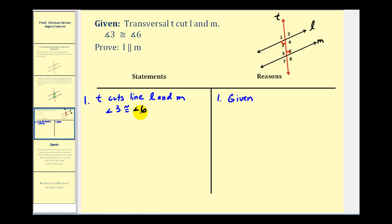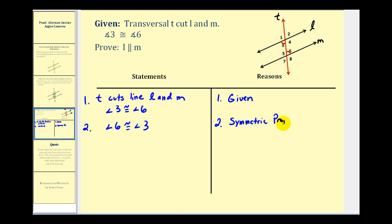Our ultimate goal is to show that angle two and angle six are congruent. So the first thing I'm going to do is restate this congruence: angle six is congruent to angle three, and this is by the symmetric property. The reason I'm changing the order here is because of the transitive property, which we'll see in just a minute.